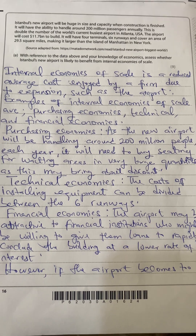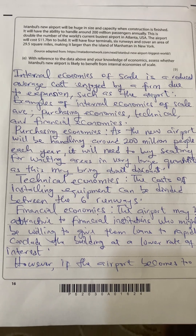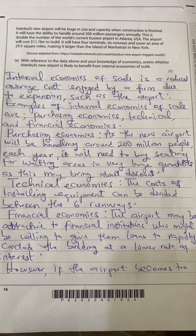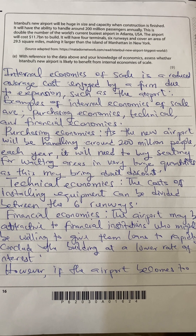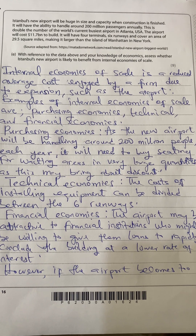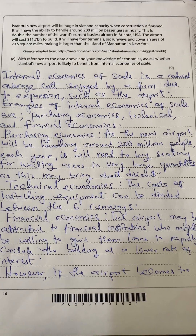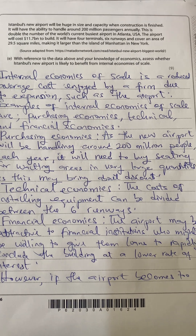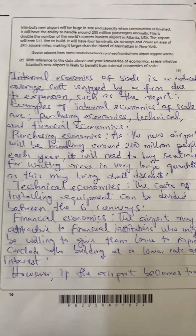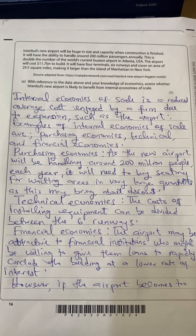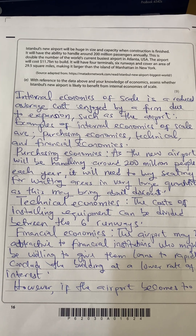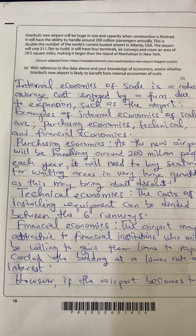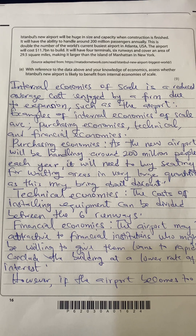For purchasing economies of scale, as the new airport will be handling around 200 million people, it will need to buy seating for waiting areas in very large quantities, which may bring about discounts. For technical economies of scale, the cost of installing equipment can be divided between the six runways which will be installed.